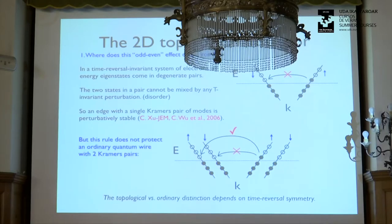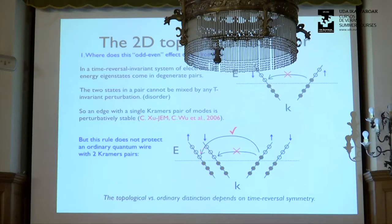The way this gets around Anderson localization is that a one-dimensional wire with time reversal that can be made in isolation — not as the boundary of something — always has two right movers and two left movers. That same scattering process is still forbidden, but I can scatter from the right mover to the left mover that is not its time-reversal conjugate. This is why something like a carbon nanotube is still unstable to disorder, but the quantum spin Hall edge is very special.